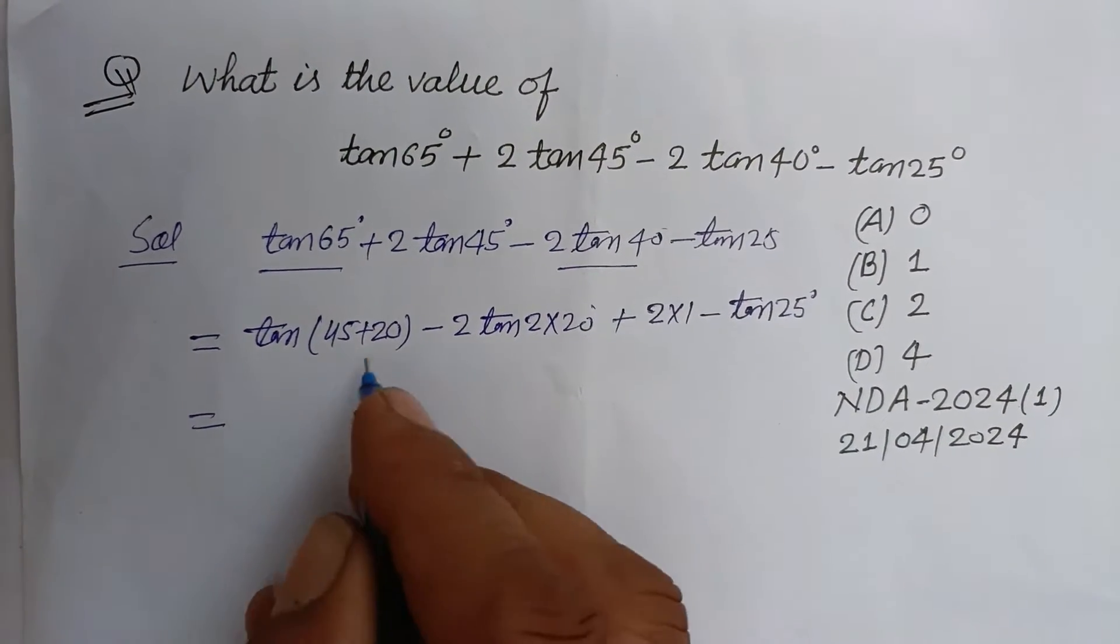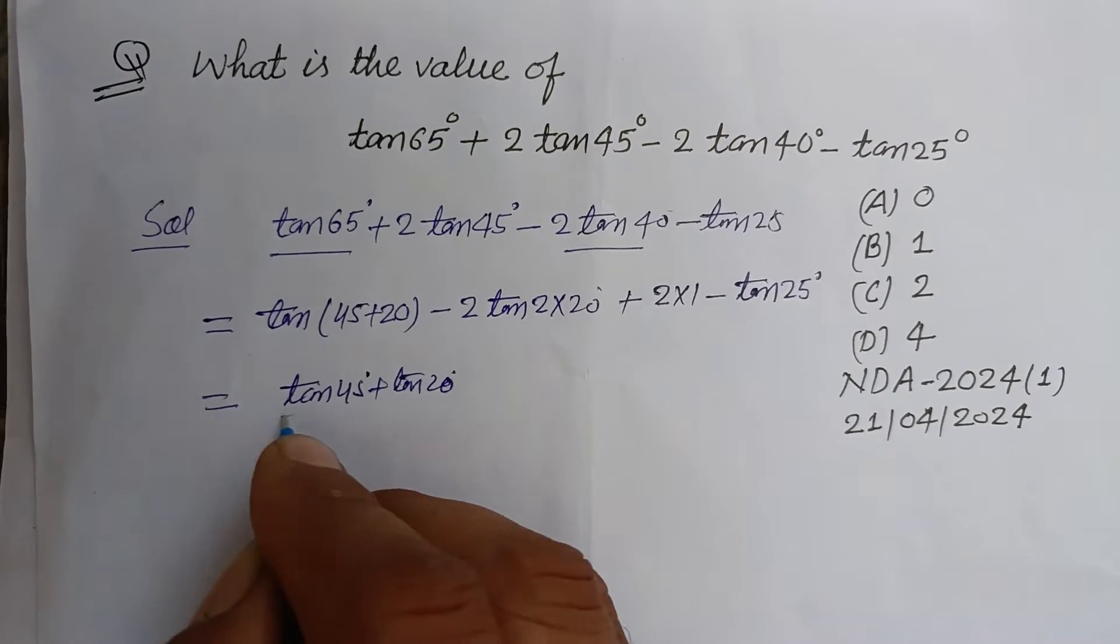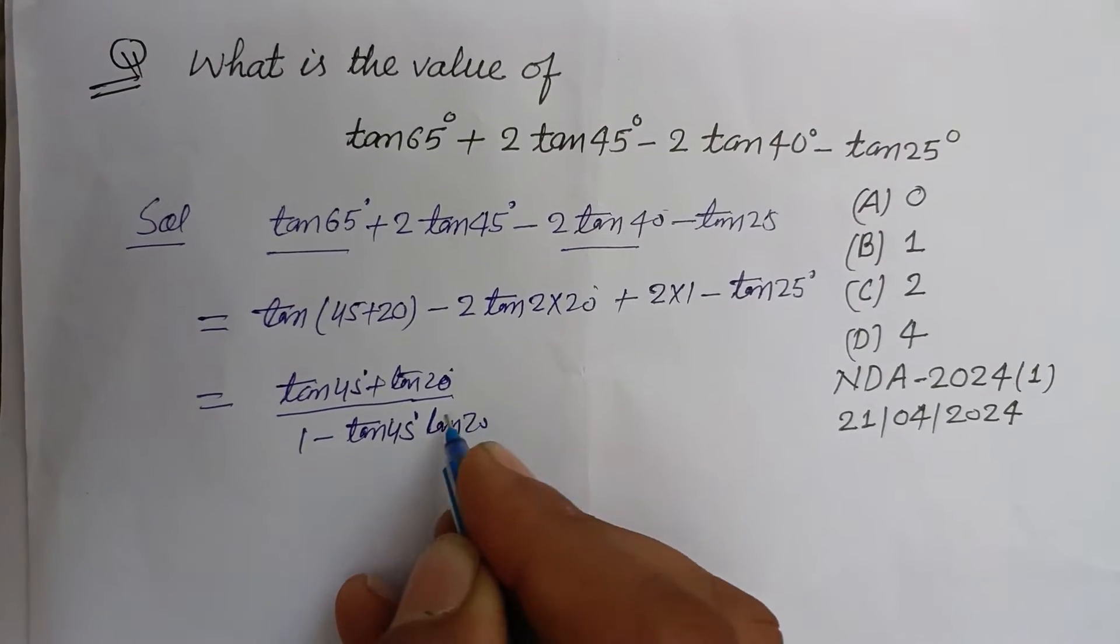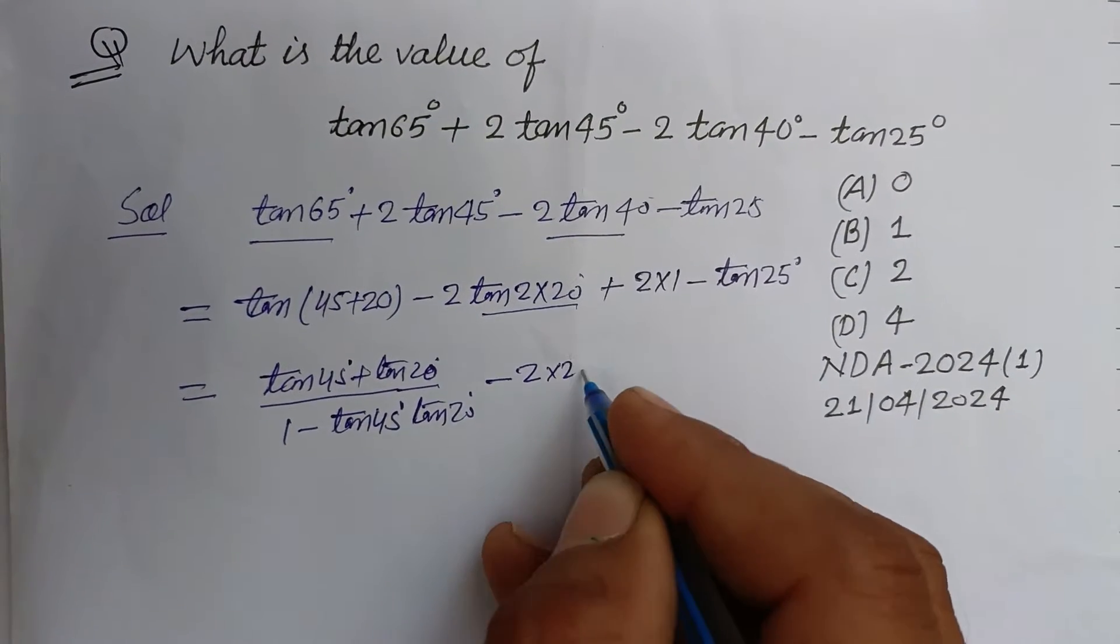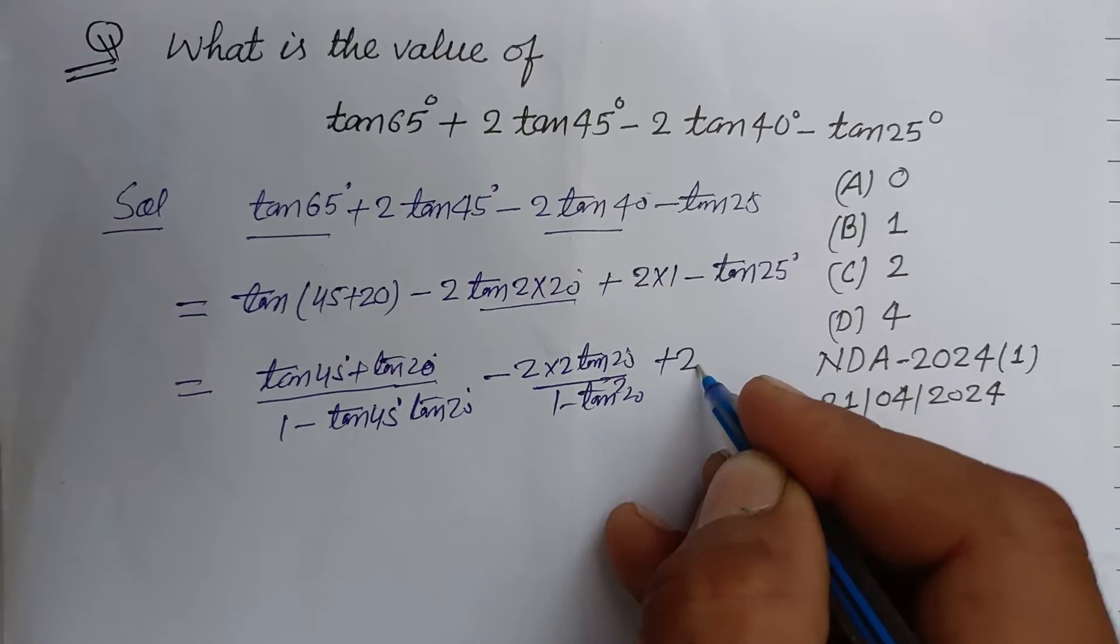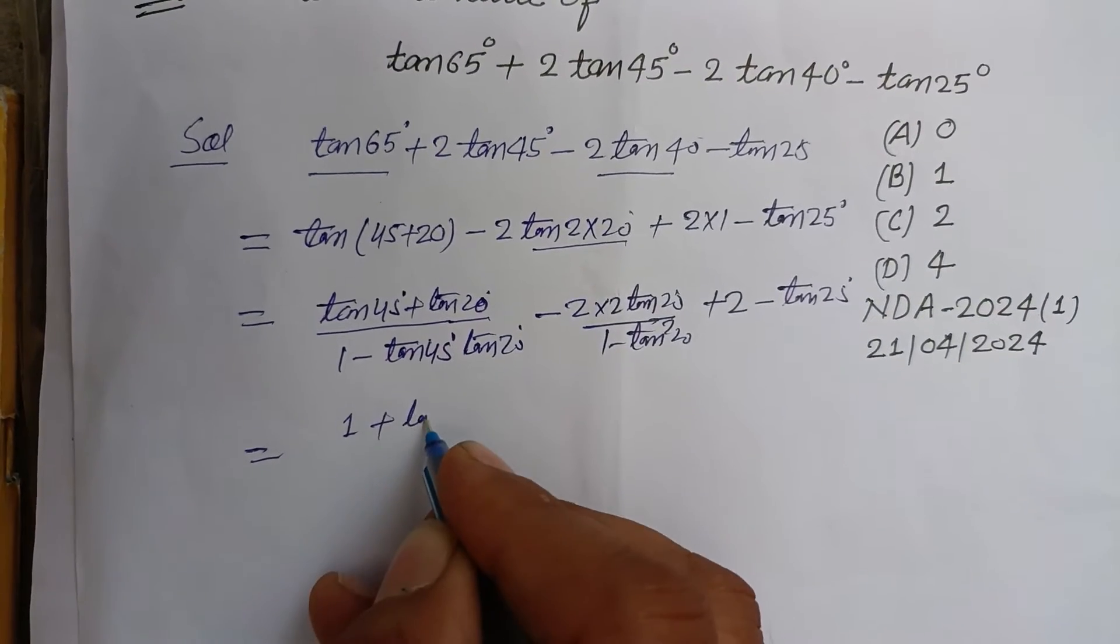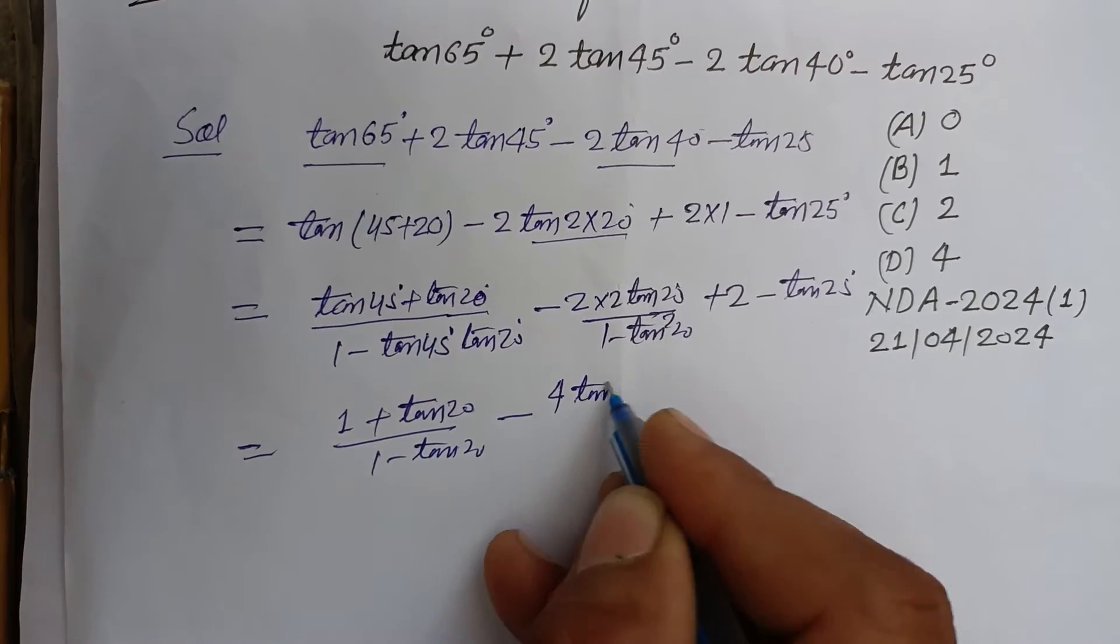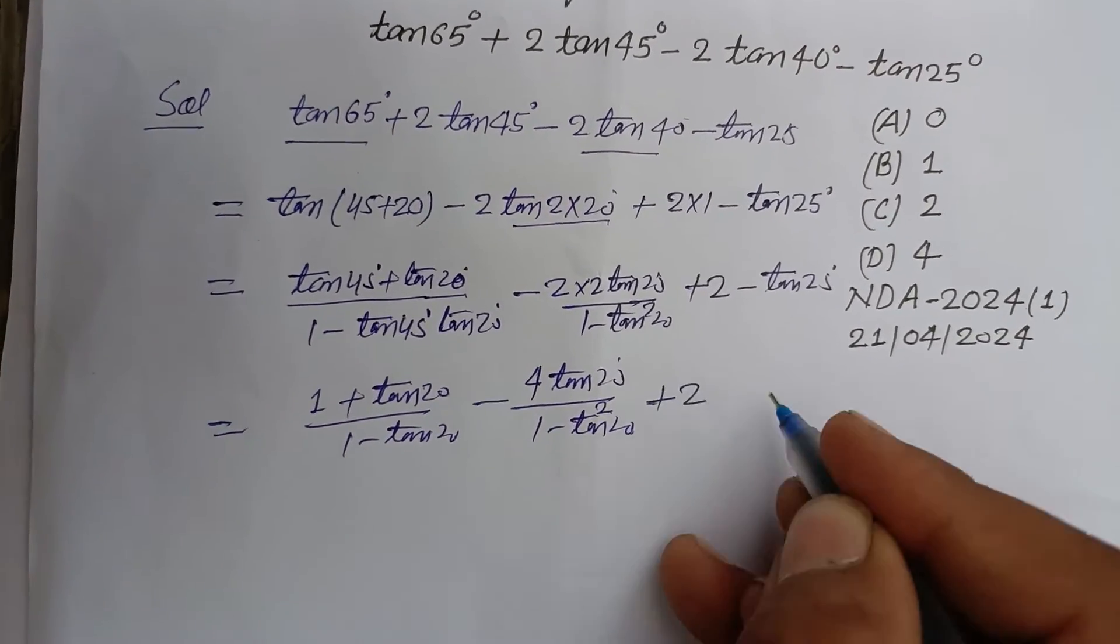Using tan(a + b) formula, tan45° + tan20° over 1 - tan45°tan20°, minus 2 times tan20°, so 2tan20° over 1 - tan²20°, plus 2 minus tan25°. This becomes 1 + tan20° over 1 - tan20°.